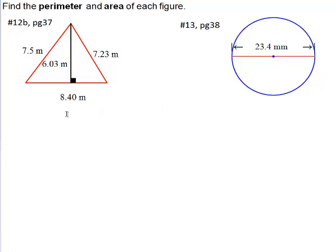Now let's look at 12b first. We have a triangle. We're given the three sides of the triangle: 7.5 meters, 7.23 meters, and 8.40 meters. So getting to perimeter, which means the distance around something, for perimeter we always add up the sides when it's a triangle or a rectangle or any type of polygon where the sides can be added. So in this case we're just going to add up the three sides.